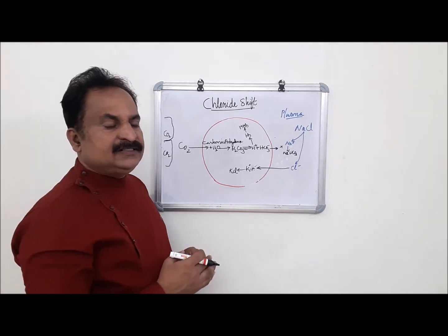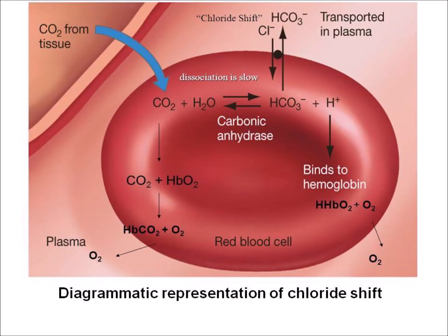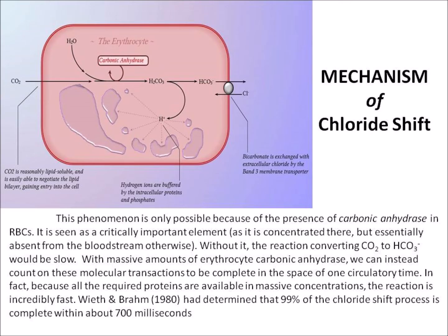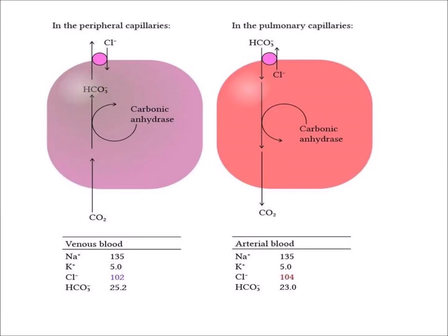Carbon dioxide passes from the blood to the lungs and is exhaled out. This diagrammatic representation shows the mechanism of chloride shift. Carbon dioxide is reasonably lipid soluble and is easily able to negotiate the lipid bilayer, gaining entry into the cell. Hydrogen ions are buffered by intracellular proteins and phosphates. Bicarbonate is exchanged with extracellular chloride by the band 3 membrane transporter. This phenomenon is only possible because of the presence of carbonic anhydrase, a critically important element. Without it, the reaction converting carbon dioxide to bicarbonate would be slow.